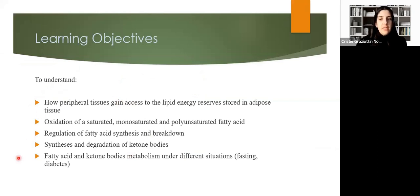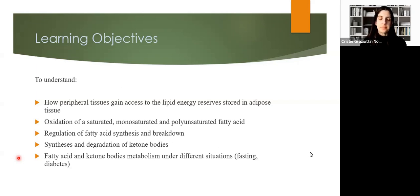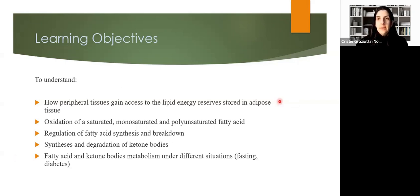For today's learning objectives, we need to understand how peripheral tissues gain access to lipid energy reserves stored in adipose tissue, oxidation of saturated, monounsaturated, and polyunsaturated fatty acids, regulation of fatty acid synthesis and breakdown, synthesis and degradation of ketone bodies, and fatty acid and ketone body metabolism under different situations such as fasting and diabetes. That's all for today's class, and I look forward to seeing you in class to discuss more about these topics.